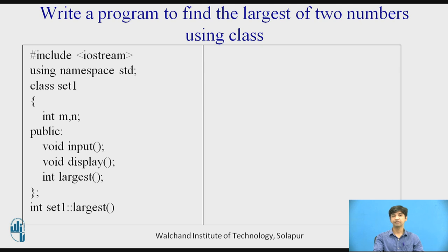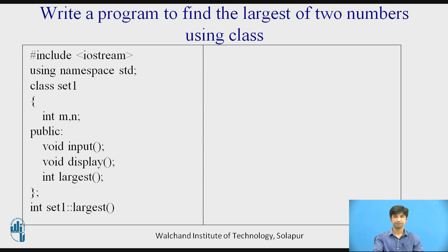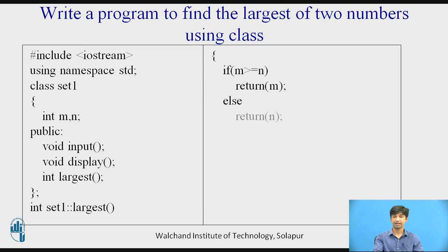Now I have to define these functions. While defining the functions outside the class, we use the scope resolution operator, as we did in the last video lecture. The return type of the largest function is integer and it belongs to the class called set1, using the scope resolution operator, then the largest function name. The function finds the largest of two numbers: if m is greater than or equal to n, it returns m, else it returns n. Then I will end this function.